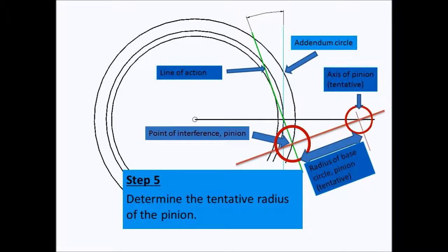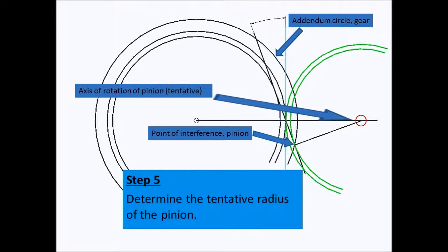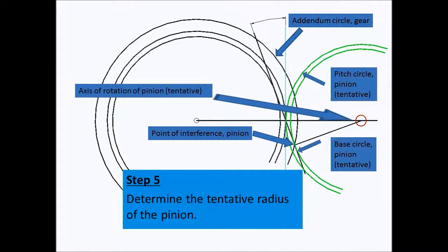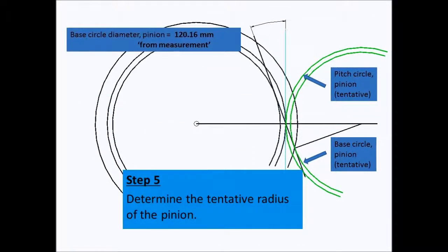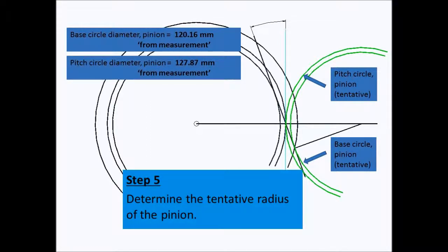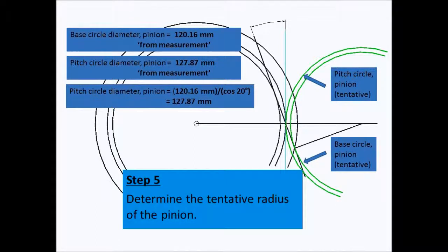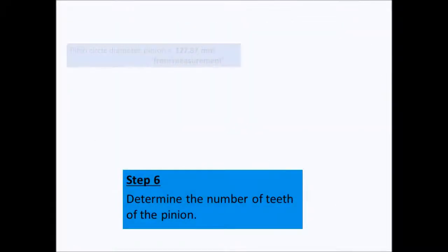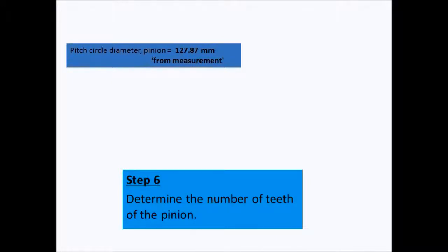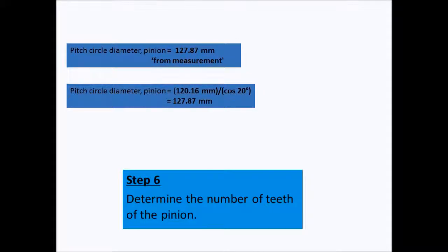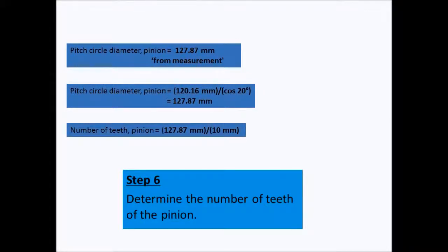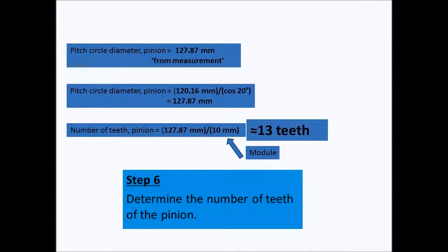Knowing that the axis of rotation of the pinion is this point, we can draw the base circle and pitch circle. From measurements we can determine the diameters of the pitch circle and base circle, and we can then compute the number of teeth of the pinion. With the number of teeth we proceed with the calculation of the diameters of the pinion.